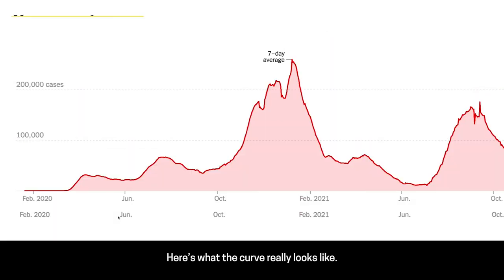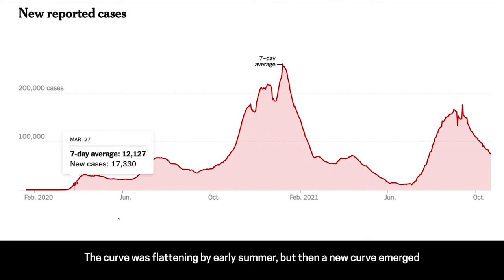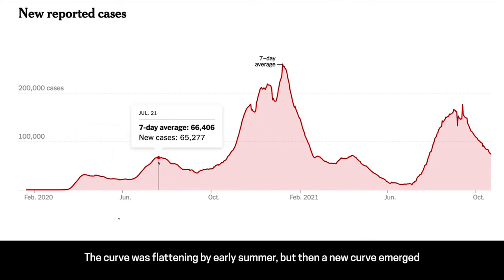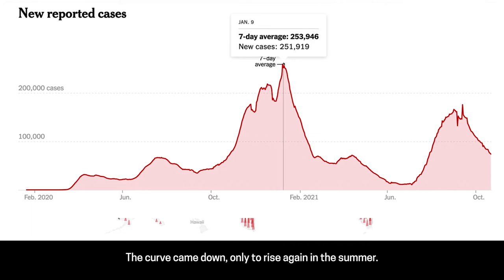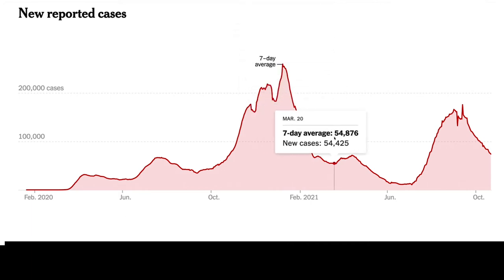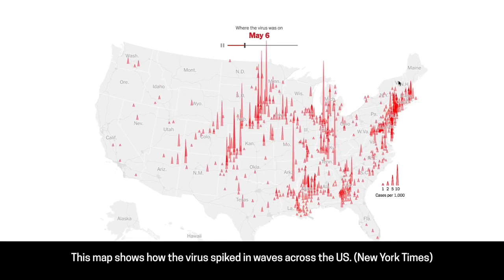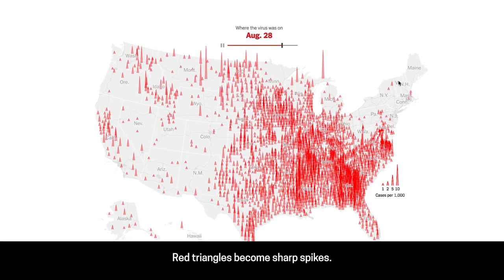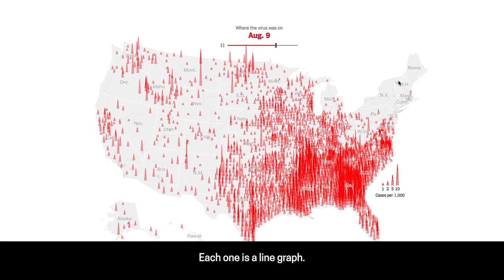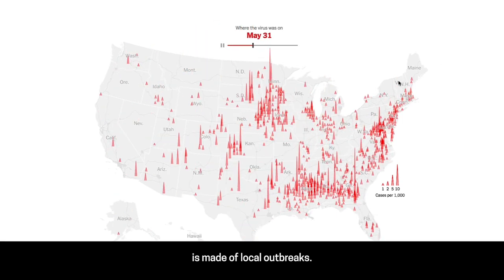Here's what the curve really looks like. The pandemic doesn't have a single peak — the red line rises and falls several times. The curve was flattening by early summer, but then a new curve emerged, heading towards the catastrophic peak of winter 2021. The curve came down, only to rise again in the summer. This map shows how the virus spiked in waves across the US. Red triangles become sharp spikes — each one is a line graph — showing that a global pandemic is made of local outbreaks.